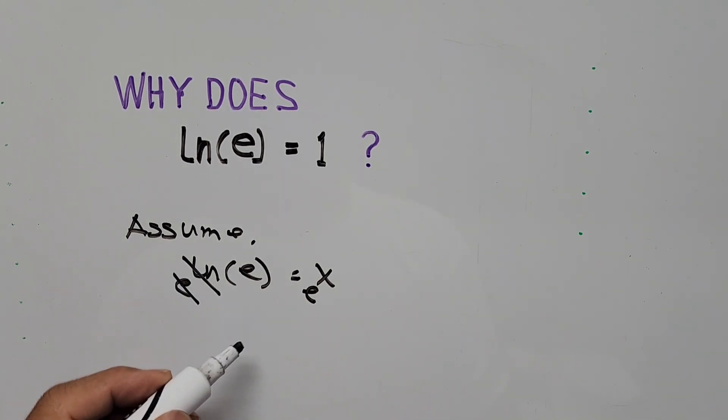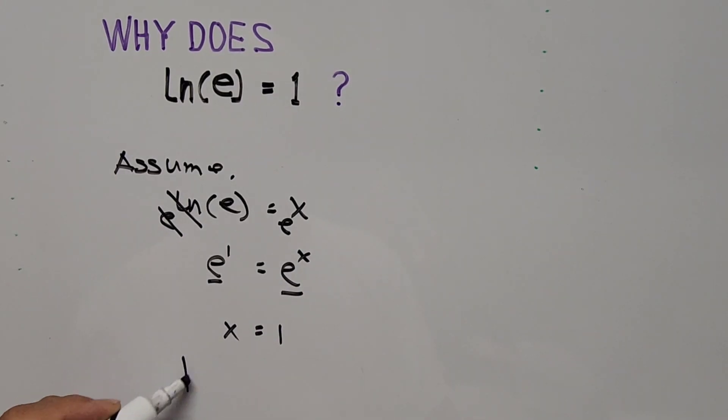Both, so we have e is equal to e to the power of x. And here, the exponent of e is simply 1. We have the same base, which means that we can express both of these exponents the same or equal. So x is equal to 1. So we have ln(e) is equal to x.